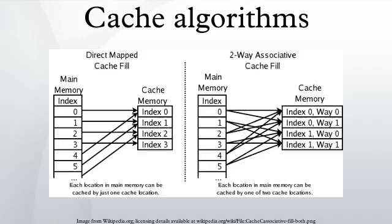Random replacement randomly selects a candidate item and discards it to make space when necessary. This algorithm does not require keeping any information about the access history. For its simplicity, it has been used in ARM processors. It admits efficient stochastic simulation.